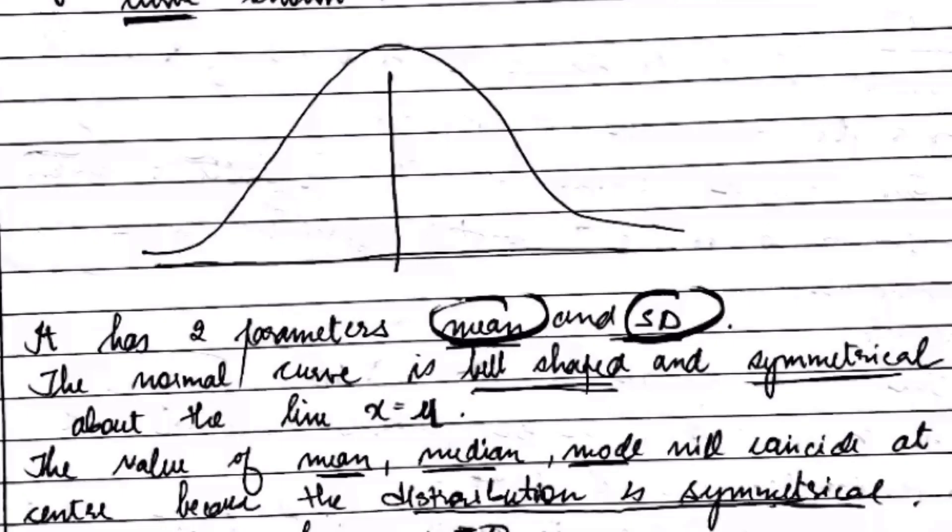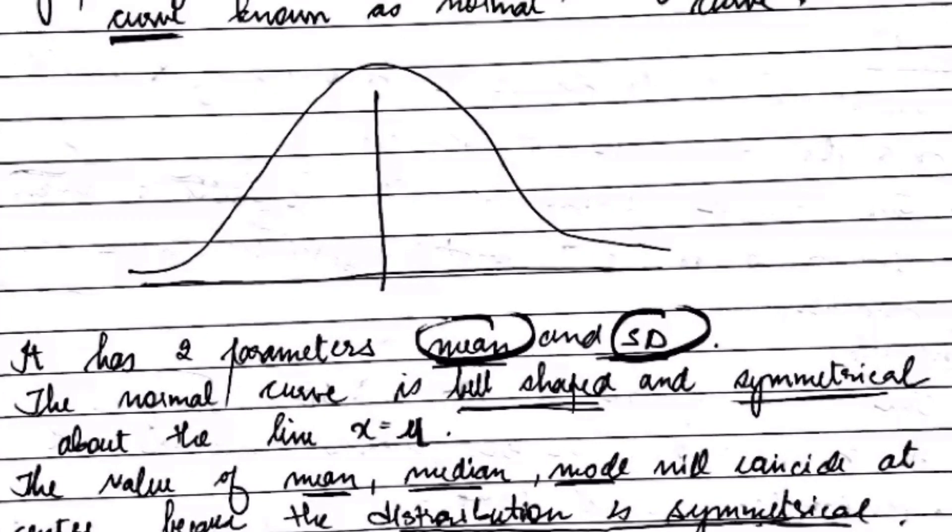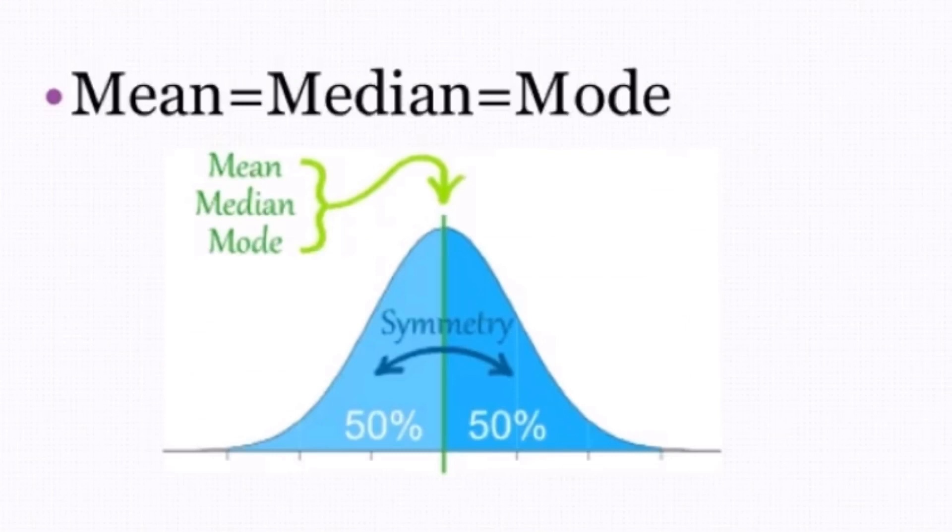It is also called the bell curve or symmetrical curve. Now let's look into the parameters. The mean, mode, and median all three are equal in normal distribution. I have shown in the diagram that the mean, median, and mode at the point are all equal in the normal distribution.